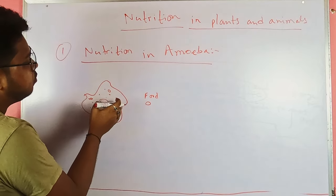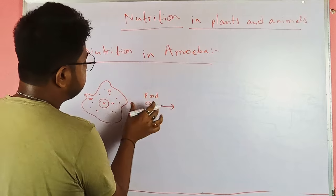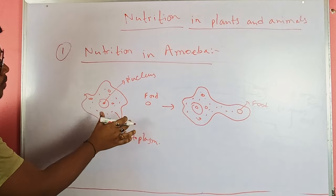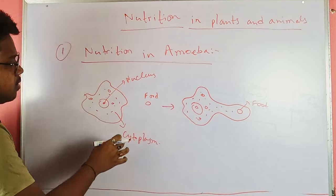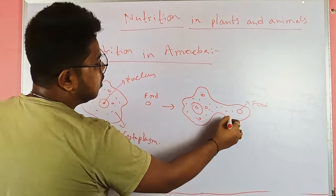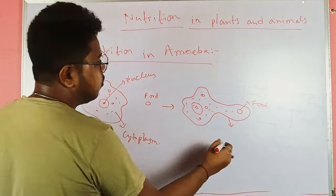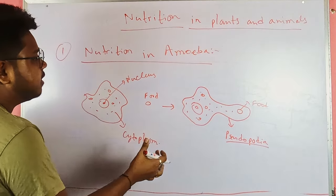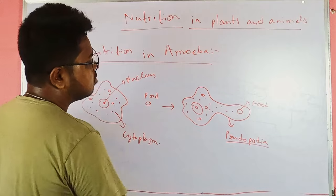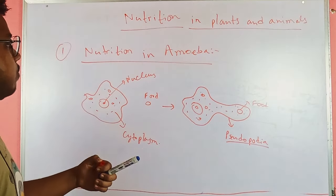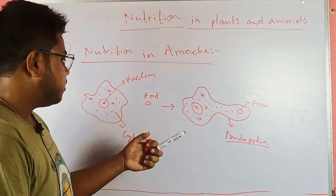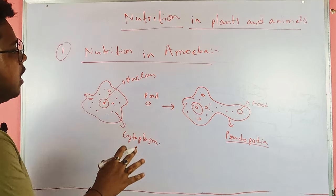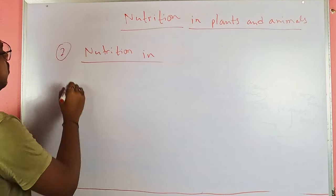Amoeba forms a pseudopodium that engulfs the food. It enlarges a particular area of itself — the pseudopodia — and engulfs the food, grabbing it within its own cell. After that it degrades or breaks down the food and absorbs or assimilates the energy present in the food.